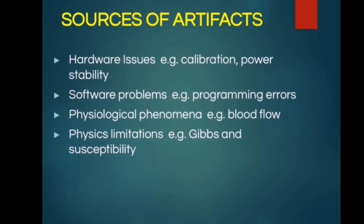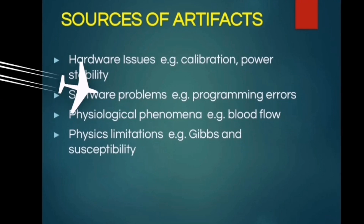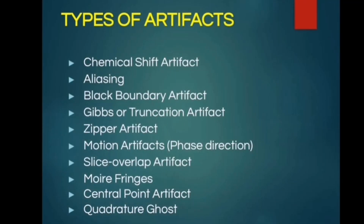There are different sources of artifacts: hardware issues, software problems, physiological phenomena, and physics limitations. Types of artifacts include the chemical shift artifact, aliasing artifact, black boundary artifact, Gibbs or truncation artifact, zipper artifact, motion, and slice overlap artifact.